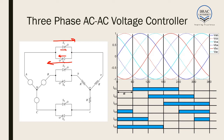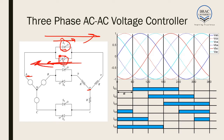Whether the output voltage VAN will become positive or negative depends on whether switch S1 is on or switch S4 is on. If switch S1 is on, current flows in this direction and the output voltage VAN is positive. If S4 is on, current flows in the opposite direction and as a result the output voltage VAN is negative.